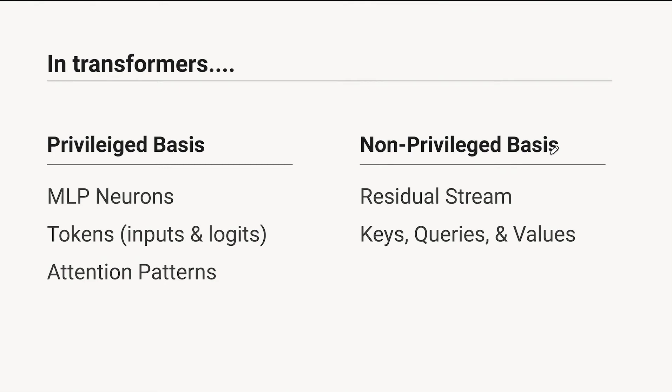There might be some exotic transformer architectures where you do have a non-linearity in your residual stream. One way in which there's a very slight effect is if you have layer norms on your residual stream, which may privilege somewhat because you're multiplying by a diagonal matrix — but it's essentially in almost all cases not going to be a privileged basis.